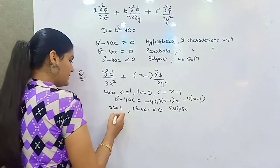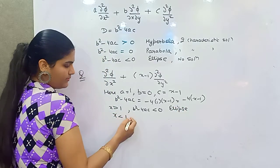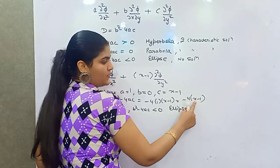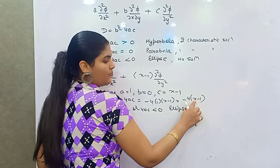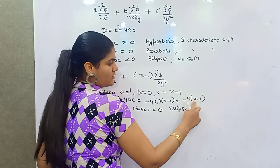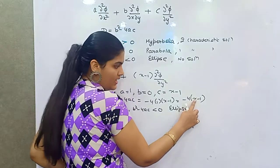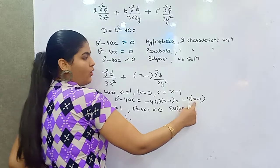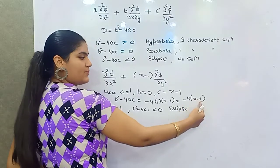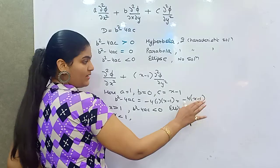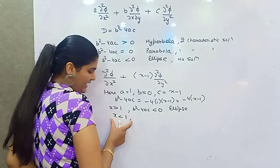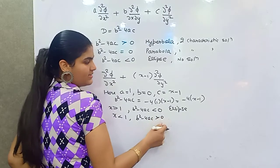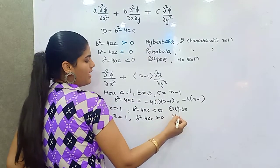If x is less than 1 — say 0 or minus 1 — then (x minus 1) is negative, so minus 4 times a negative number gives a positive result. Since b squared minus 4AC is greater than zero, the equation forms a hyperbola when x is less than 1.